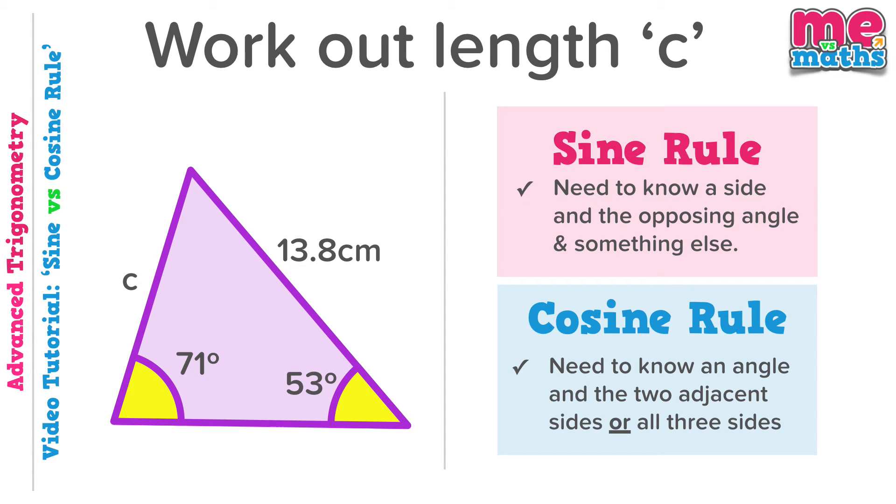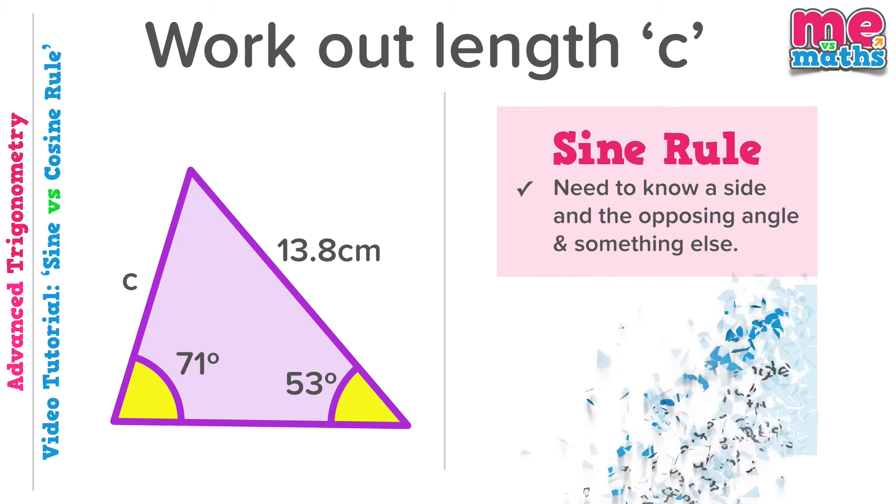A new question, and here we're wanting to find a side. We do know a side and the angle opposite, the 13.8 cm and the 71 degrees. And we know another angle, and we're looking for what's opposite that. So the sine rule will work again.